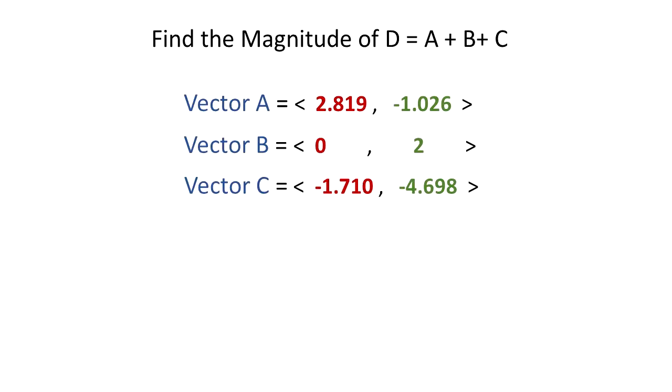Now we have to find the magnitude of vector D, which is the addition of vector A plus vector B plus vector C. We have all vectors aligned, and we're going to add x components with x components and y components with y components. The Dx component equals the summation of all x components: Ax plus Bx plus Cx. The Dy component is the summation of all y components: Ay plus By plus Cy.